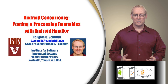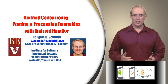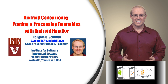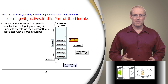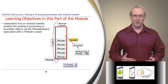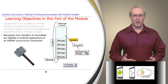Welcome to the next part of the module on Android concurrency frameworks, which continues our discussion of the Android handler class. This part explains how the handler class enables the posting and processing of runnable objects via the message queue associated with the thread's looper. It also shows how handlers and runnables are applied in Android applications and its Hammer concurrency framework.